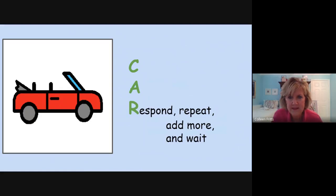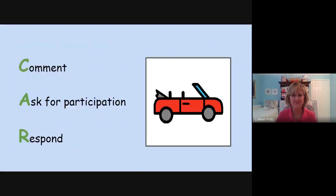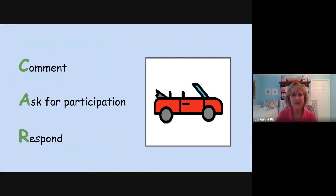If they do respond by using their communication board, or if you have verbal students, you want to respond back — repeat, add more, and wait. So if they use their communication board and point to the word 'like,' you could respond by saying 'you said like,' then adding another word to it — 'you like' — and then waiting to see if there's more they might want to say. The CAR strategy is pretty simple, though not always easy when you go to read the book. It's easier to do one on one, but you can do it with a group too. CAR stands for comment, ask for participation, and respond.